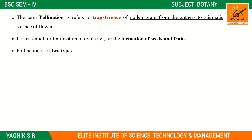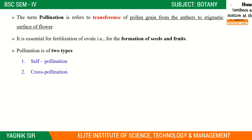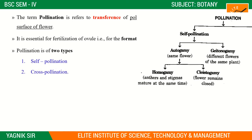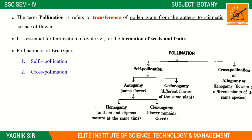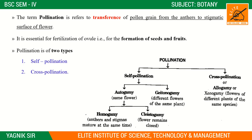So pollination is normally of two types: self pollination and cross pollination. This is the basic chart. Self pollination is divided into two types: autogamy and geitonogamy.